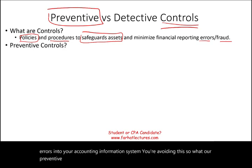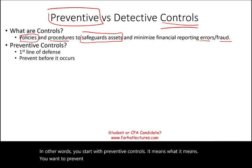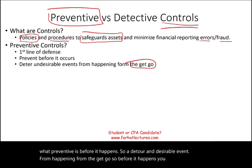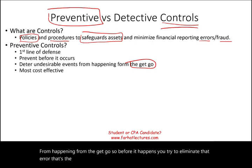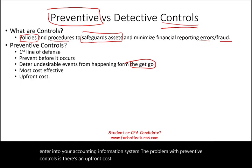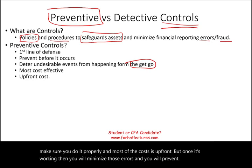Preventive controls are your first line of defense. You start with preventive controls — it means you want to prevent the error before it occurs. You deter an undesirable event from happening from the get-go. That's the most effective control because you're not letting the error enter into your accounting information system. The problem with preventive controls is there's an upfront design cost, but once it's working, you will minimize and prevent errors and safeguard your assets.